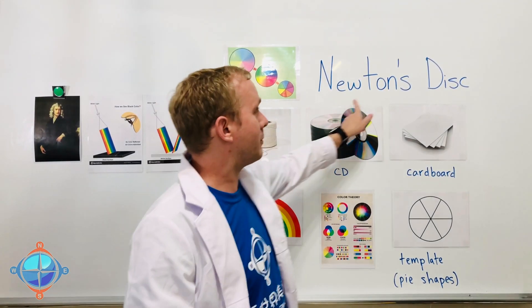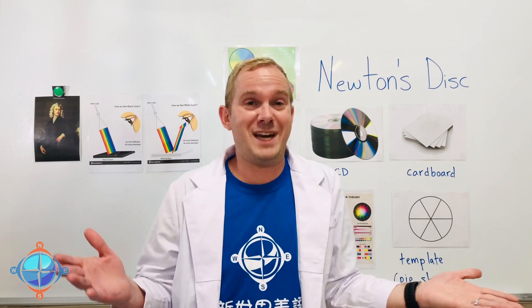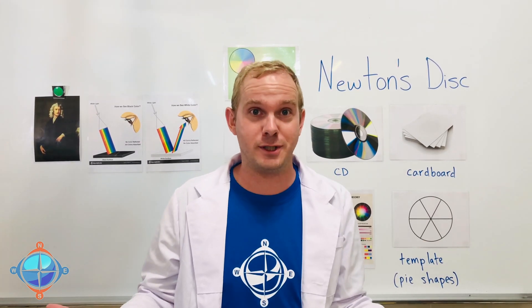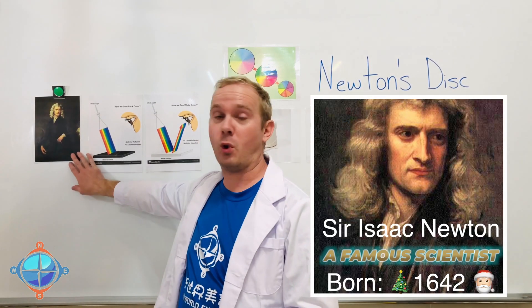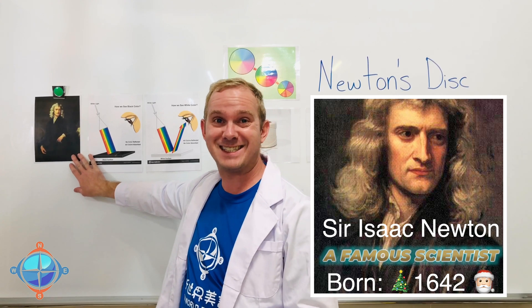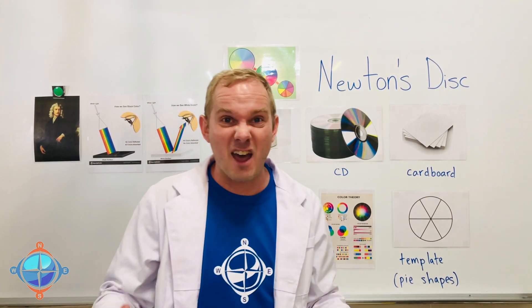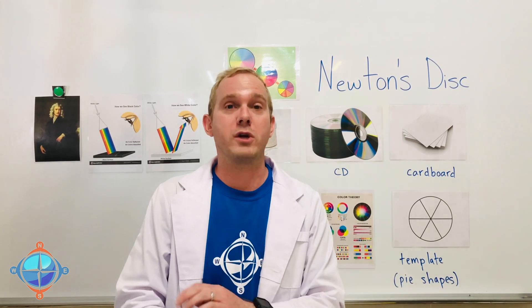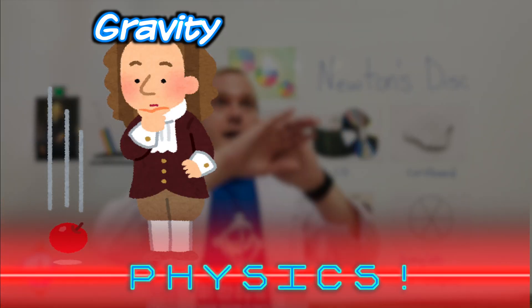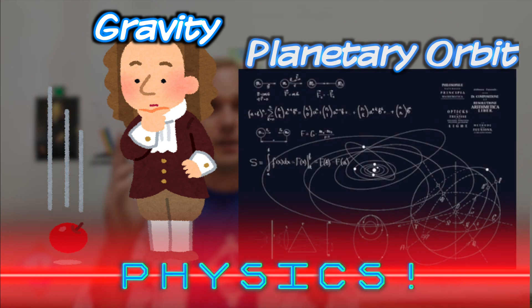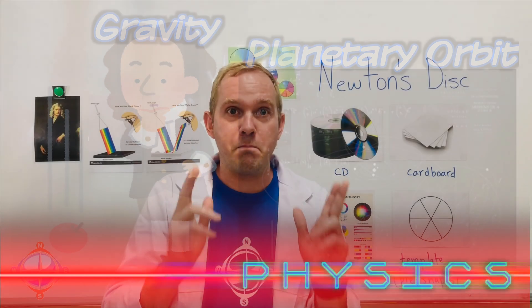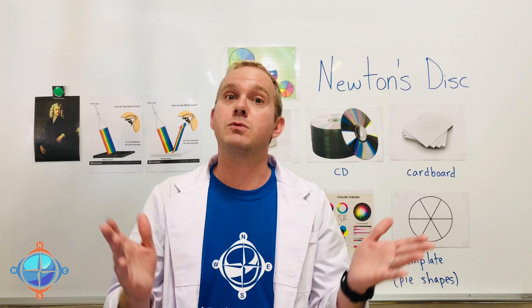So Newton's Disc. Today we're going to be making Newton's Disc. But what is it and who was Newton? Well, Newton was born on Christmas Day in 1642. He's one of the most famous scientists that have ever lived. Newton worked a lot with physics, like gravity and how the planets orbited each other. But one of his biggest fascinations was with light.